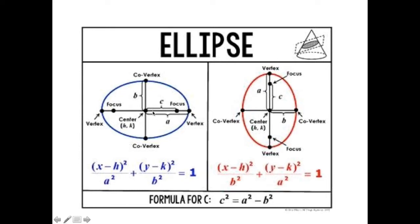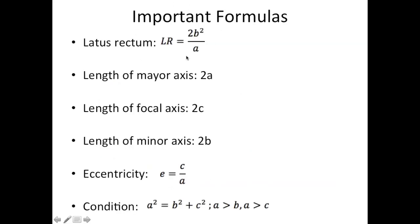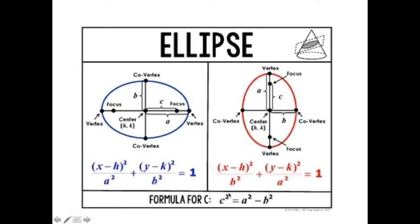We need to know this formula: c² = a² − b², because c is the distance from the center to the focus, a is the distance from the center to the vertex, and b is the distance from the center to the co-vertex. Important formulas: the latus rectum is 2b²/a, the length of the major axis is 2a, the length of the focal axis is 2c, the length of the minor axis is 2b, and the eccentricity is c/a. The condition is that a² = b² + c².